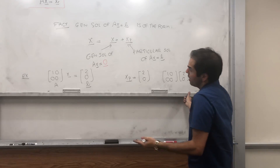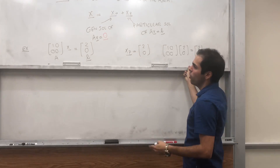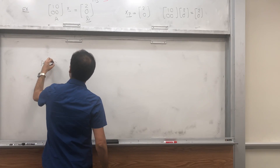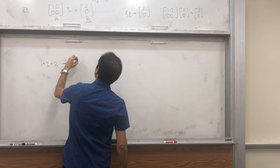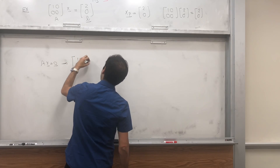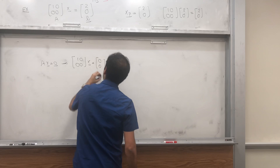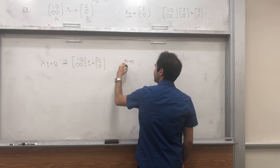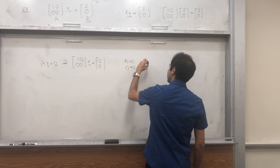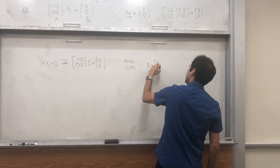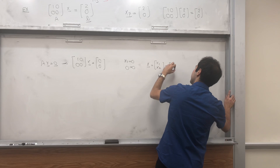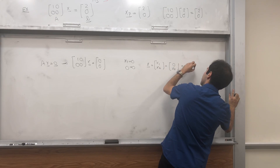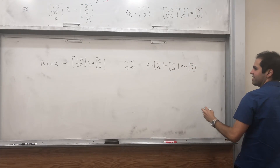Then all we need to do is solve the homogeneous equation, where [1, 0; 0, 0] x equals [0; 0]. That just means x1 equals 0 and 0 equals 0, so x = [x1; x2] = [0; x2] = x2 times [0; 1]. That is our x0.